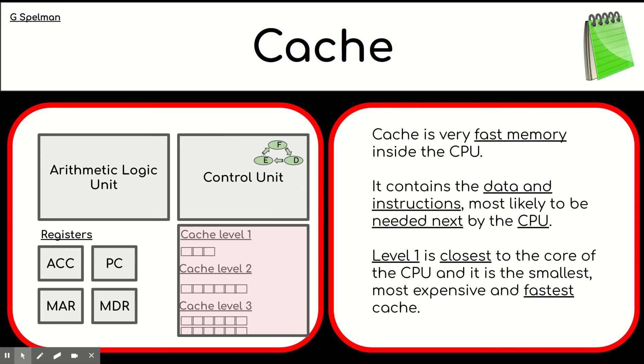So the cache then contains the data and instructions most likely to be needed next by the CPU. It is very fast memory. And looking here, we've got level one, which is the closest to the core of the CPU, and it is also the smallest and it's the fastest. And then we've got level three, which again is very fast compared to RAM, but that's further away and not as fast as level one.